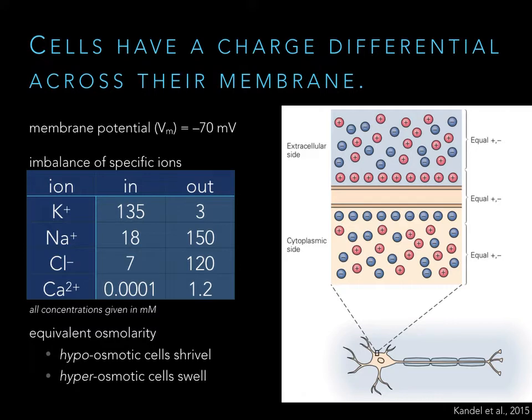The illustration on the right shows the lining up of charges on both sides of the membrane, where it gets lined with positive and negative charge on the outside and inside. So membrane potential is very local, and we'll discuss that throughout this lecture.